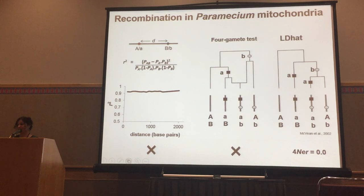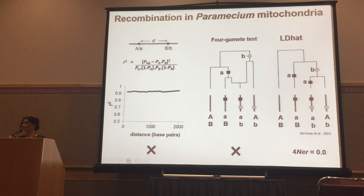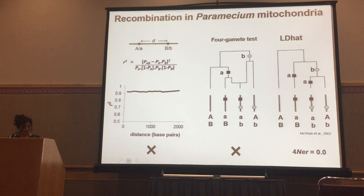The question then becomes: if there is no recombination in mitochondria, is the efficacy of selection lower than in the nucleus? These are partially asexual species, so recombination in the nucleus is also lower — but it is still worth asking. We asked that question next.